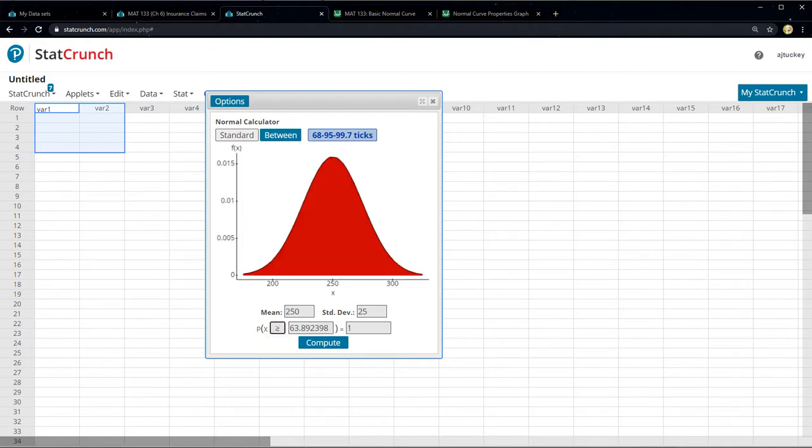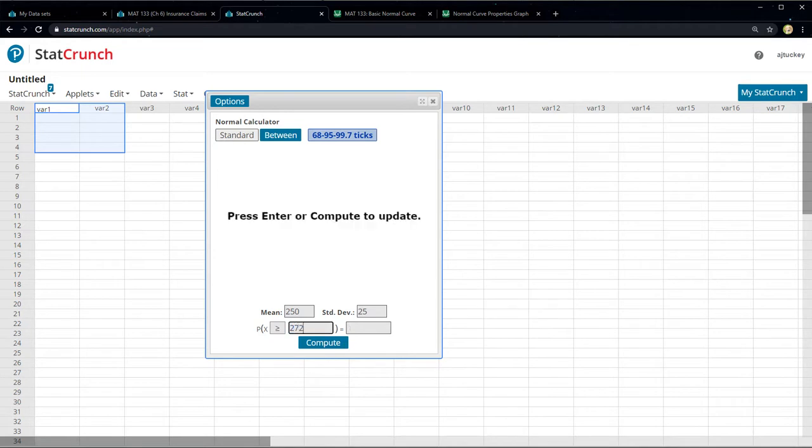And then it was giving me an X value, so I want greater than the X value of 272.4, enter. And that looks like that blue zone that was shaded, and it says 0.185.